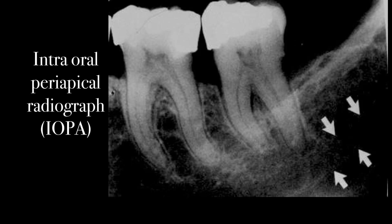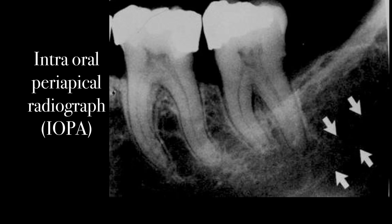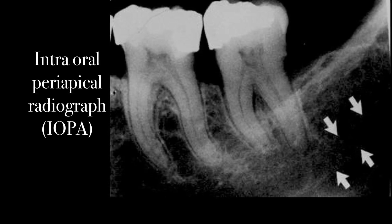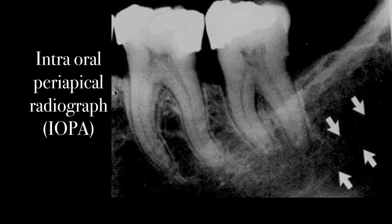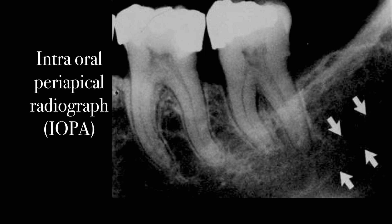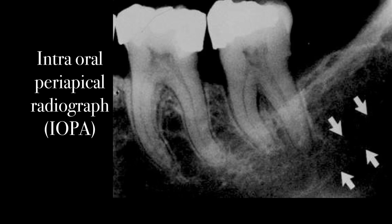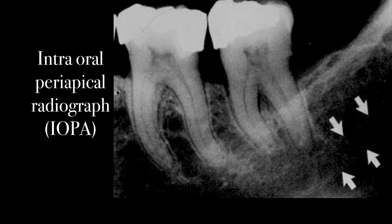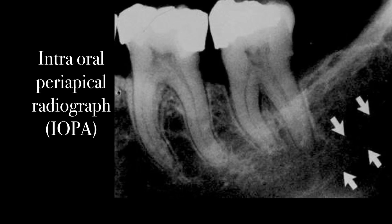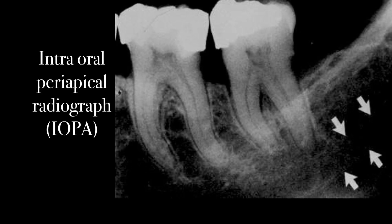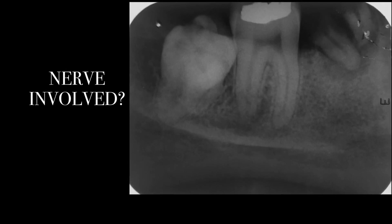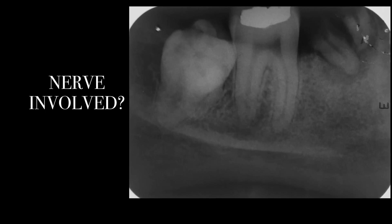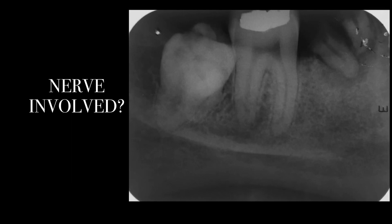The surgical removal of lower third molars endangers both the lingual and inferior alveolar nerves because of the close proximity of the nerves to the roots of the impacted teeth. Many studies have reported the frequency of nerve injury during removal of third molars, and most indicate that inferior alveolar nerve function is disturbed in 1.3 to 7.8 percent of cases. Most patients will regain normal sensation within a few weeks or months, and less than 1 percent have a persistent sensory disturbance.